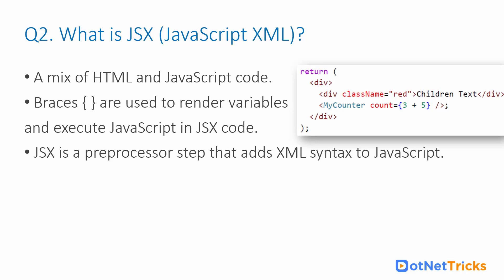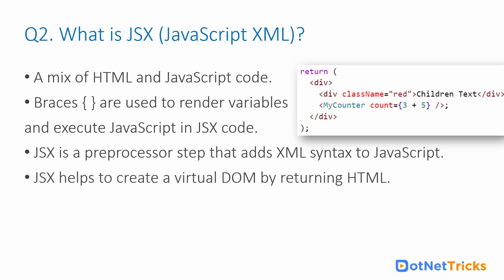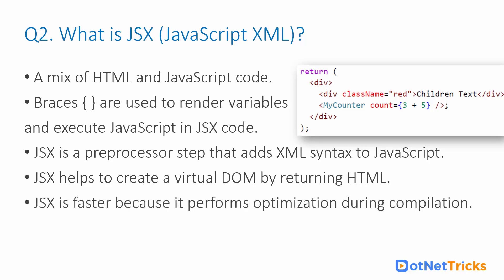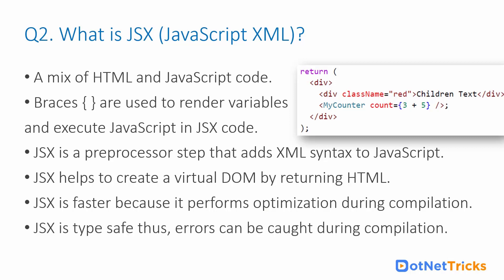JSX is a pre-processed step that adds XML syntax to JavaScript. JSX helps us create a virtual DOM by returning HTML. JSX is faster due to performance optimization during compilation, and JSX is type-safe — if you forget to close an element or make an error in your expression it will notify you at compile time. That's why we prefer JSX over plain JS when building a React.js application.